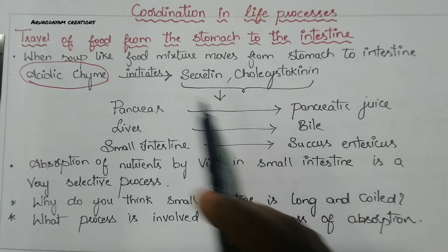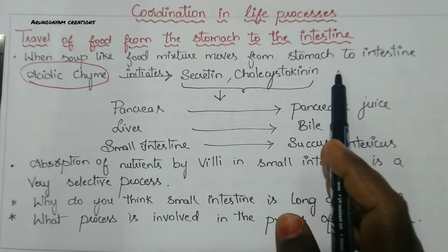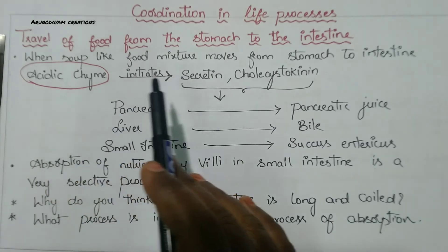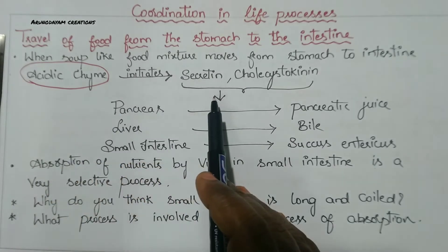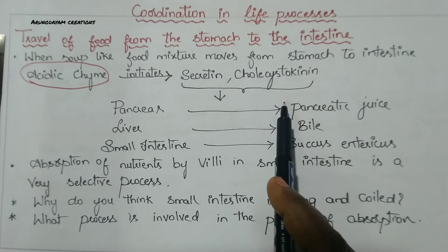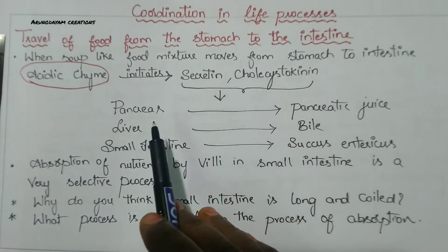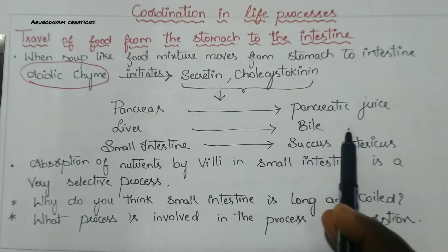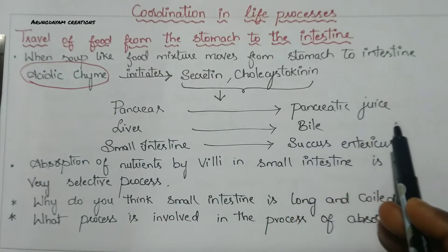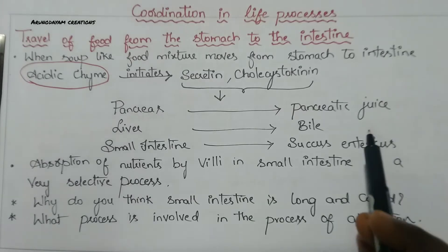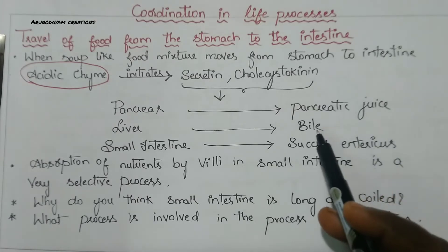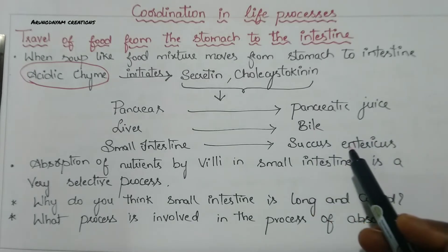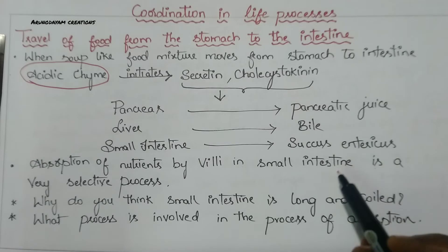So the soup-like chyme mixture enters the duodenum and because it is acidic, it initiates secretion of hormones called secretin and cholecystokinin. These two hormones in turn initiate three organs to produce their respective juices: pancreatic juice digests proteins, carbohydrates, and fats using enzymes; bile performs emulsification of fats; and succus entericus contains many enzymes that digest food material.